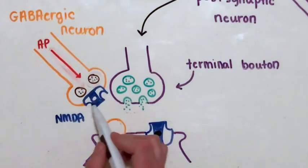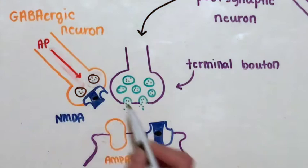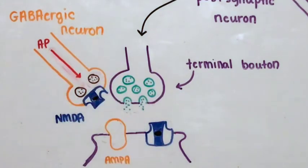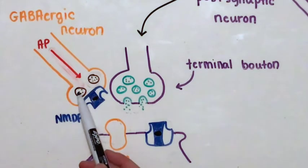Ketamine can also bind to NMDA receptors on GABAergic neurons, effectively inhibiting them. GABAergic neurons release the inhibitory neurotransmitter GABA.